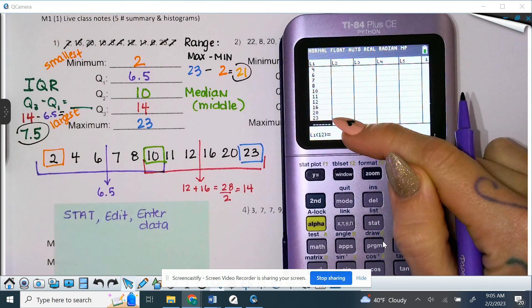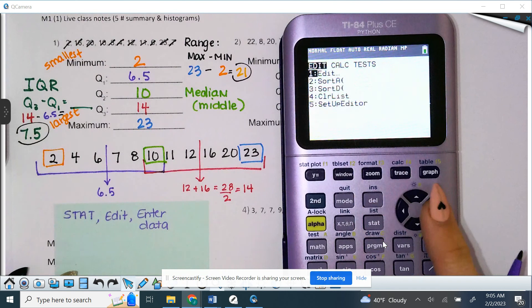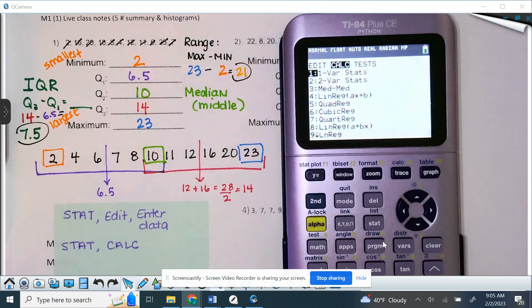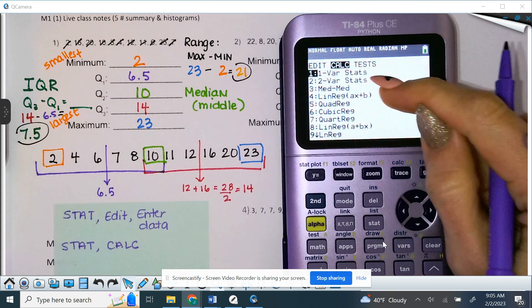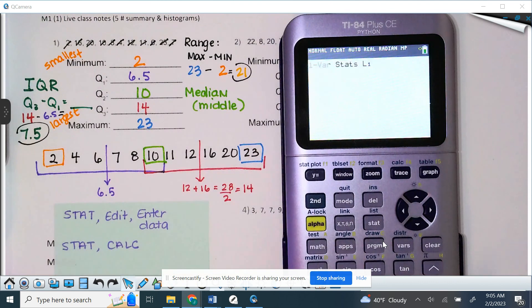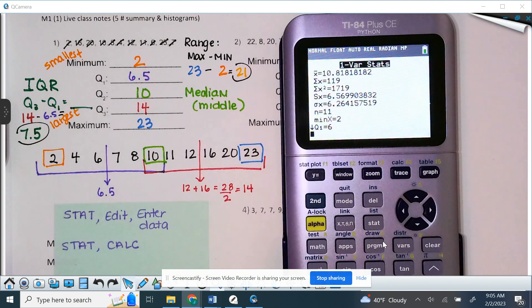So, you hit a number, hit enter, hit a number, hit enter, and it will go straight down your L1. Okay. So, now you have stat, edit. So, enter your data. However many points there are. Also, down at the bottom where it says L1, 12, that means I'm sitting in the blank spot of 12, which means I have 11 numbers in there. And we counted them and we know that there's 11 numbers. So, that's perfect. We're going to hit stat. We're going to go over to calc.